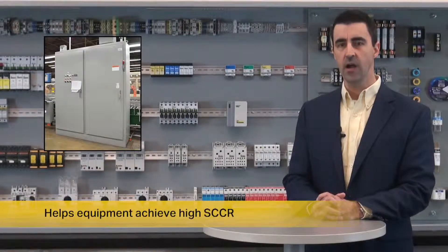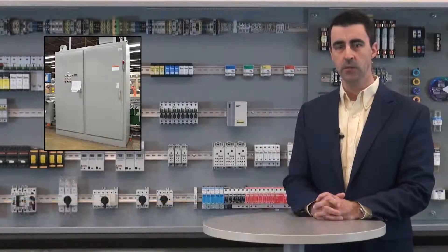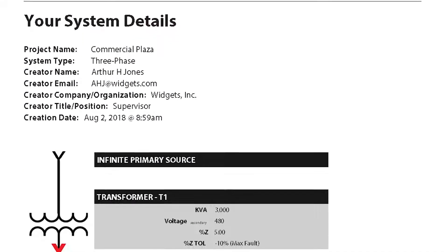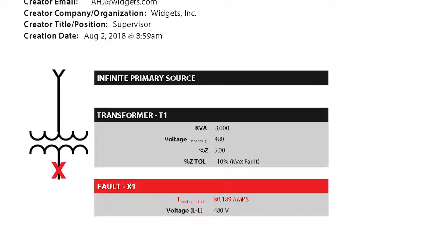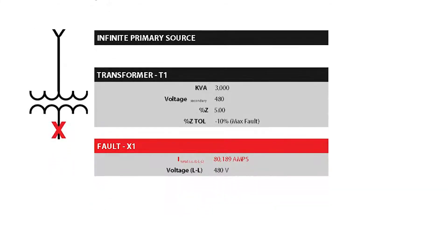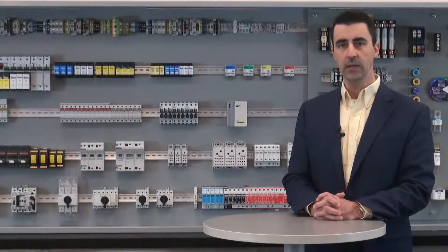Fuse current limitation helps equipment achieve high short circuit current ratings. Branch circuit components inside industrial control panels and machines, HVAC control panels, and other UL 508A listed equipment can be protected by current limiting fuses in the feeder circuit. The low peak let-through can help raise the overall equipment short circuit current rating.